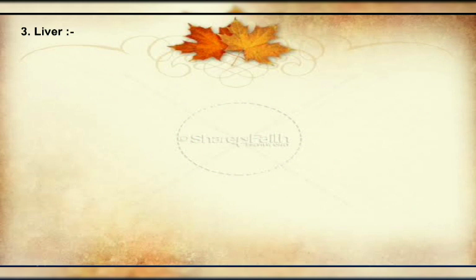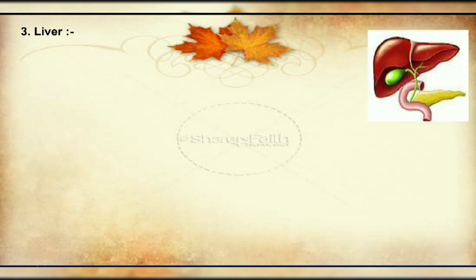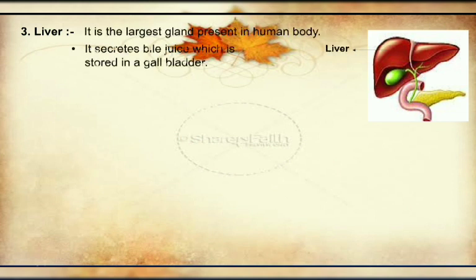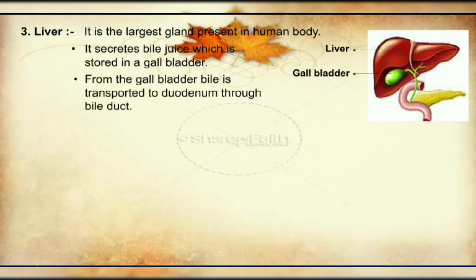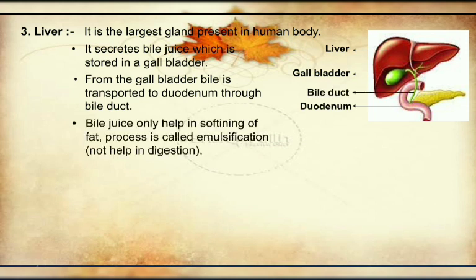Next is the liver — the largest gland in our body. It secretes bile juice, which is stored in the gallbladder. Bile is transported through the bile duct to the duodenum region. Bile does not help in digestion — it only helps in the softening of fat. That process is called emulsification of fat, and the resulting fat is called emulsified fat.